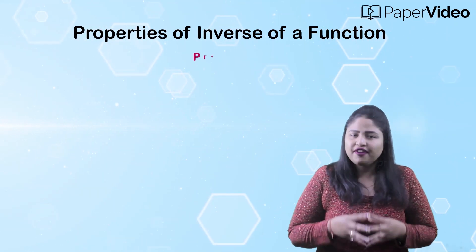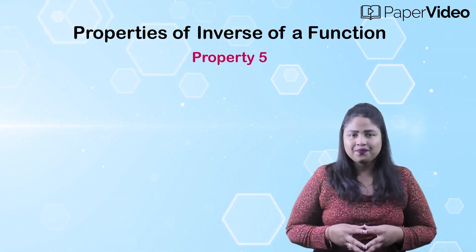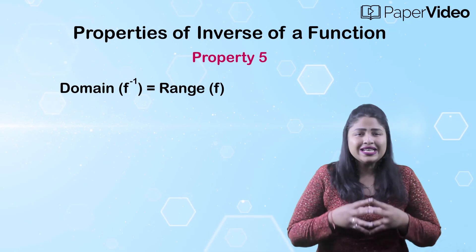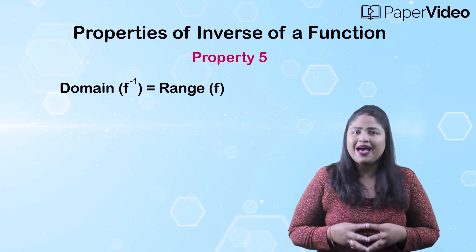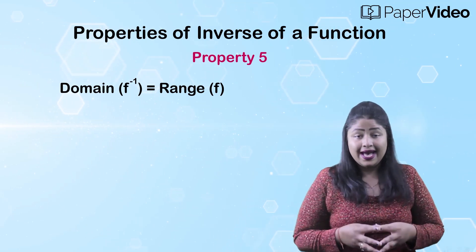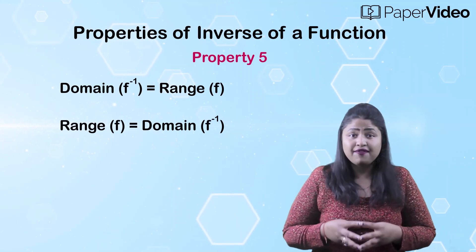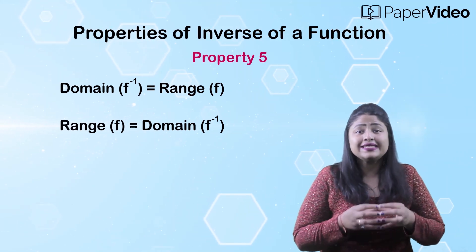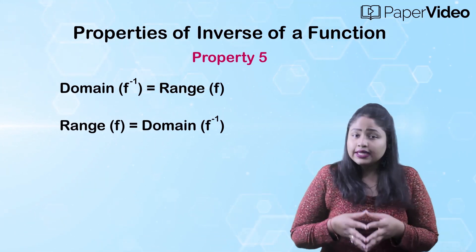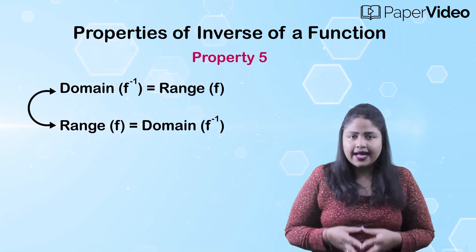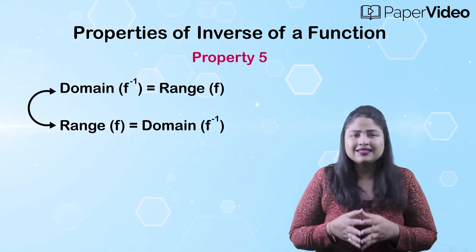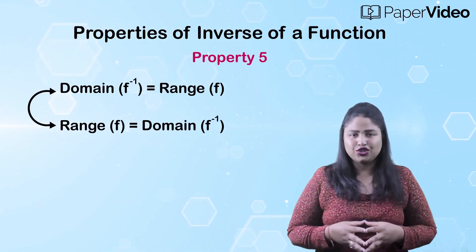According to the fifth property, the domain of the function f inverse is the same as the range of the function f, and the range of the function f inverse is the same as the domain of the function f. This means that the domain and range get reversed under the inverse function.